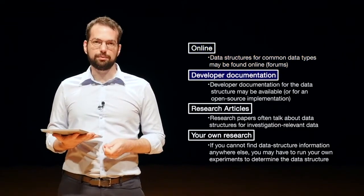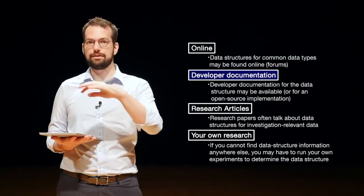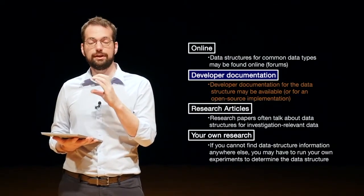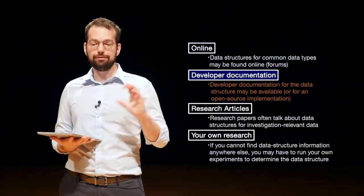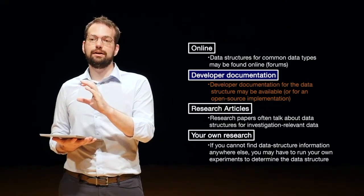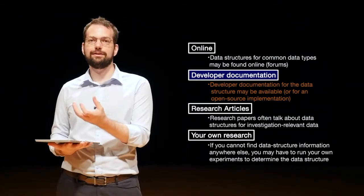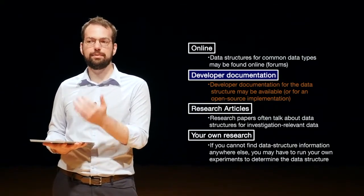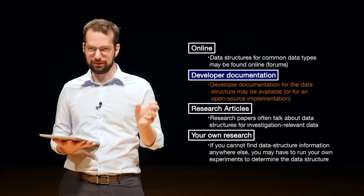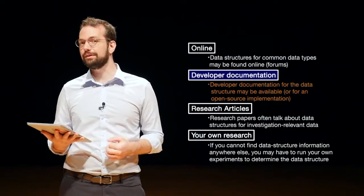If you can't find something with a quick online search, look for developer documentation. So the companies that actually make these data structures, for example, a Word file has its own data structure. The company might make some information about that Word file data structure available to developers. Groups that are trying to make open source support for that file type might also have documentation about the data structure. So they've already done the work for you.